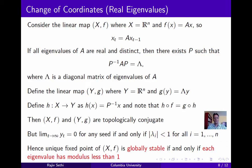Since the two systems are conjugate, we deduce that the unique fixed point of the first system, which is also at the origin, is globally stable if and only if each eigenvalue of A has modulus less than 1. Now this applies only if A has real and distinct eigenvalues, so let's consider the case of complex eigenvalues.